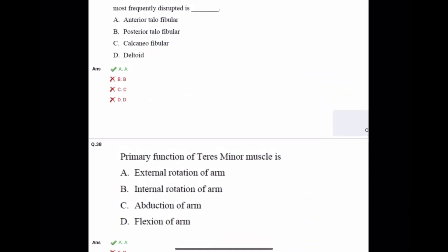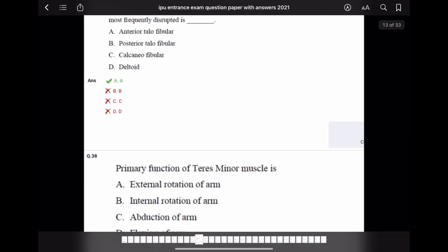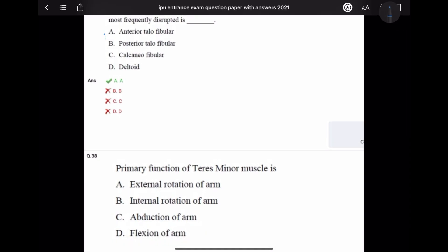Question 37: Due to forceful inversion and plantar flexion of the ankle, which ligament is most frequently disrupted? Answer is ATFL, that is anterior talofibular ligament, option A. ATFL is the most commonly involved ligament in ankle injuries.